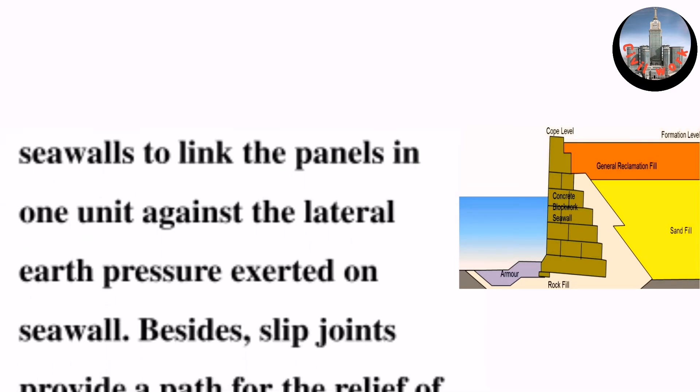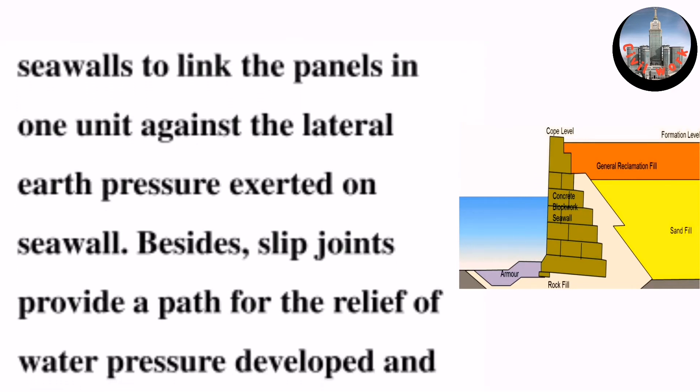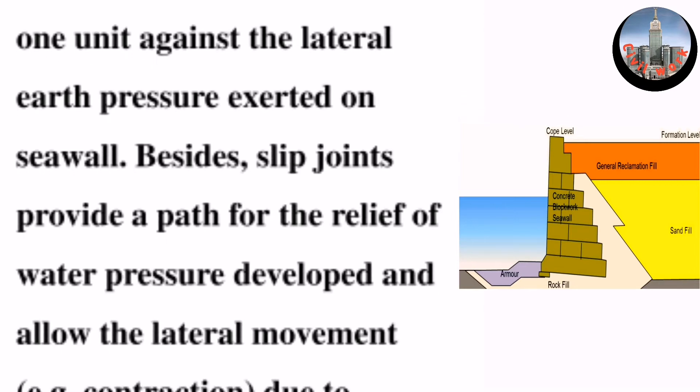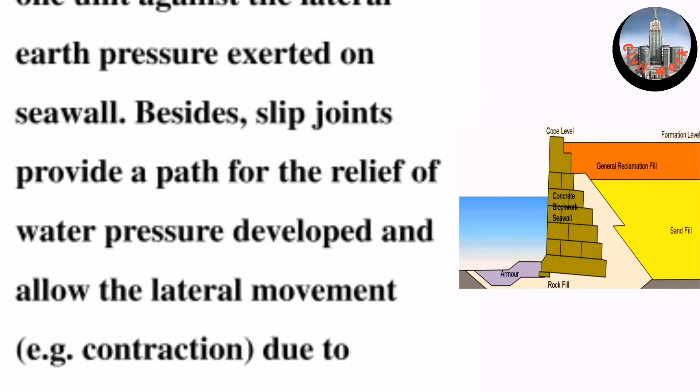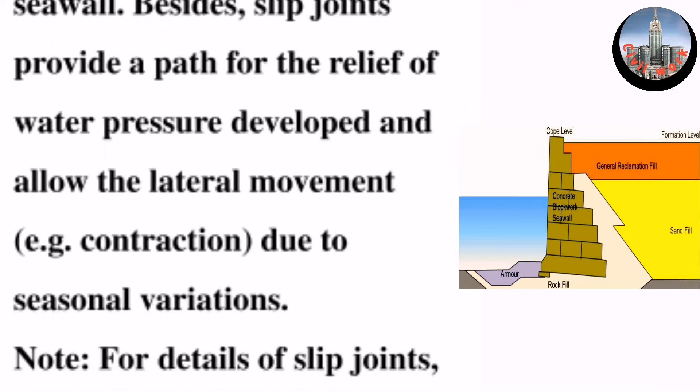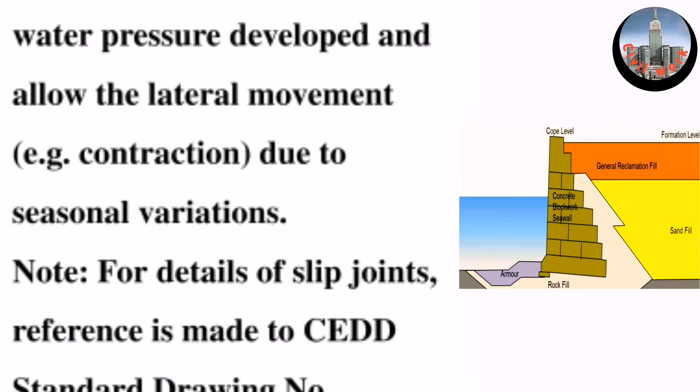This resists lateral earth pressure exerted on the seawall. Besides, slip joints provide a path for the relief of water pressure developed and allow lateral movement, for example contraction, due to seasonal variations.